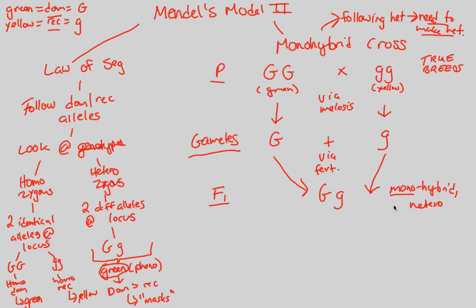Based on the dominant-recessive relationship, this F1 heterozygote will obviously express a green phenotype, since capital G is dominant to lowercase g. Any time you see capital G, the physical portrayal of that trait will be green. This is our F1 generation. In the next video, we'll do the actual cross with this heterozygote to figure out the 3 to 1 phenotypic ratio that Mendel developed.